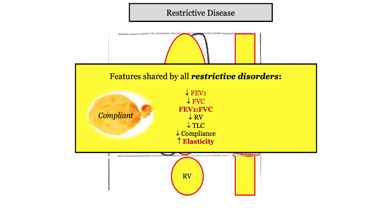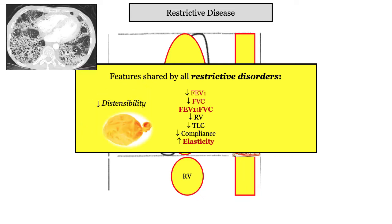The other key derivatives relate to compliance and elasticity. Compliance refers to the distensibility of tissue. The graphic shows a balloon that has been blown up too many times — very distensible or compliant. In restrictive or fibrotic lung disease, the compliance or distensibility is reduced. You won't be blowing up the fibrotic lung too many times.